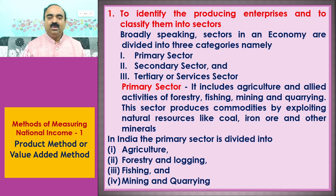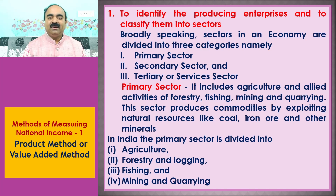Step 1: To identify the producing enterprises and to classify them into sectors. Broadly speaking, sectors in an economy are divided into three categories: 1. Primary sector, 2. Secondary sector, and 3. Tertiary or services sector. The primary sector includes agriculture and allied activities of forestry, fishing, mining, and quarrying.